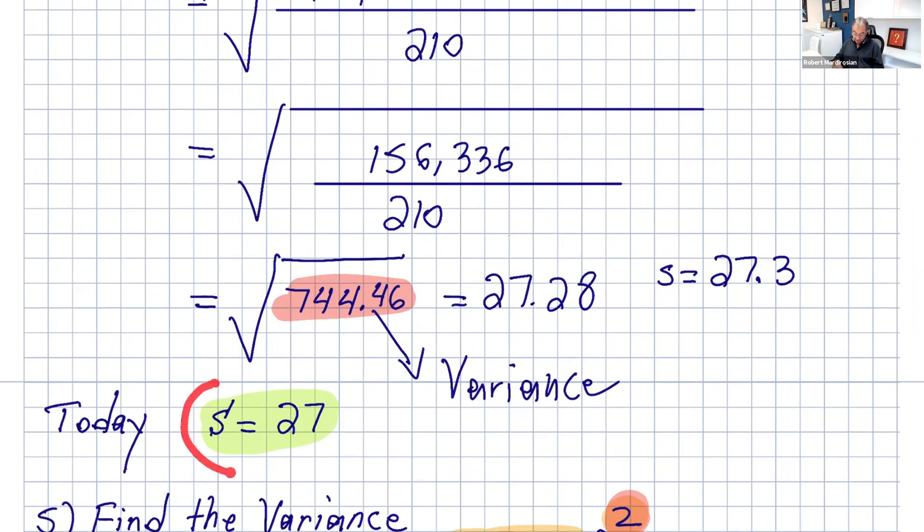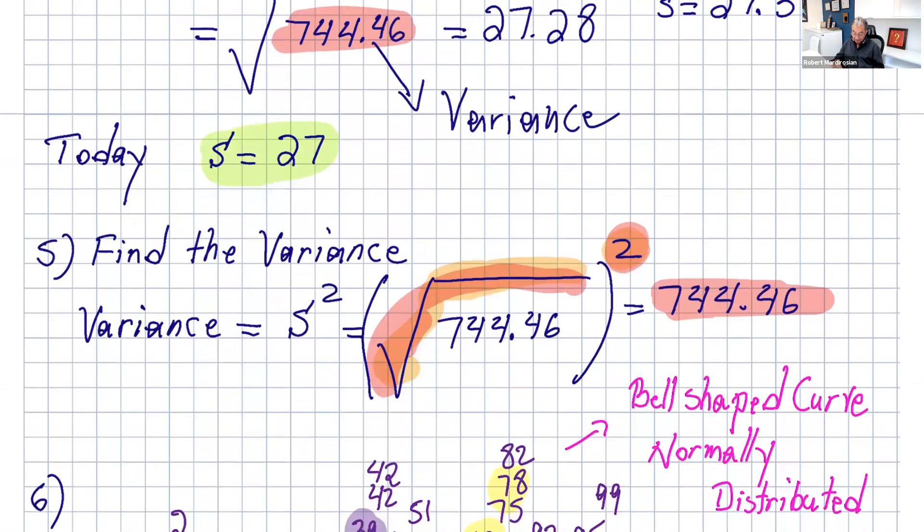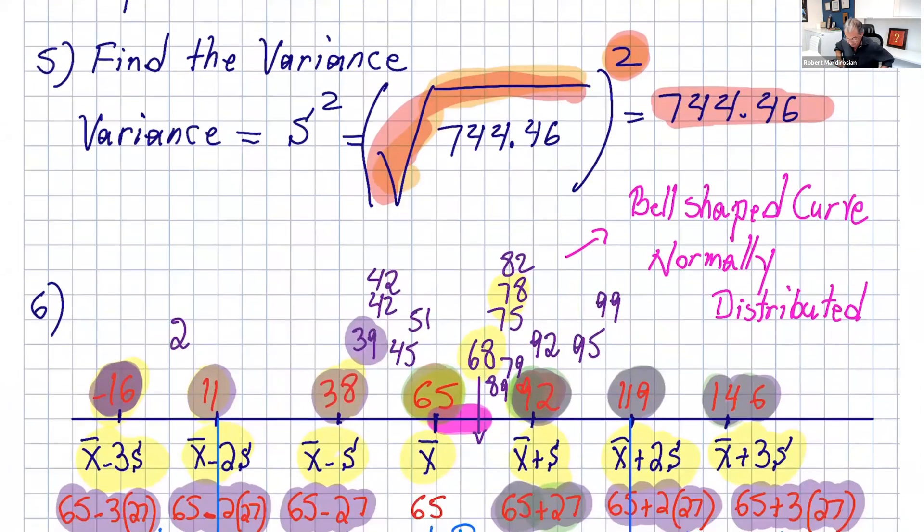Today we're going to pick a whole number to make calculations easier. This number under the radical is called the variance of the data. Variance by definition is standard deviation squared. So if I take standard deviation and square that, I get 744.46.